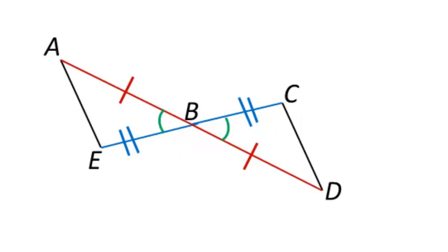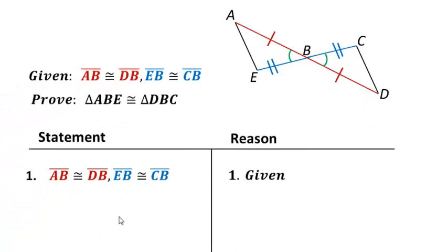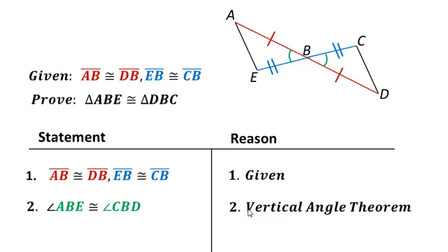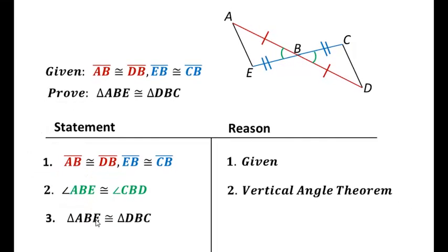We have a pair of vertical angles, and vertical angles are always congruent. We're going to add that angle ABE — note that I'm using three letters, because just using angle B doesn't properly describe that angle. Angle ABE is congruent to angle CBD by the vertical angle theorem. Now we have two sets of corresponding sides and the included angle between them all congruent. Triangle ABE is congruent to triangle DBC by the side-angle-side postulate.